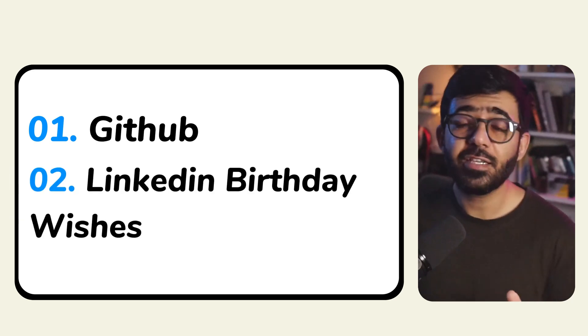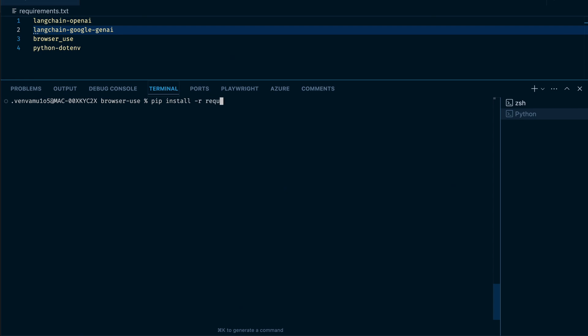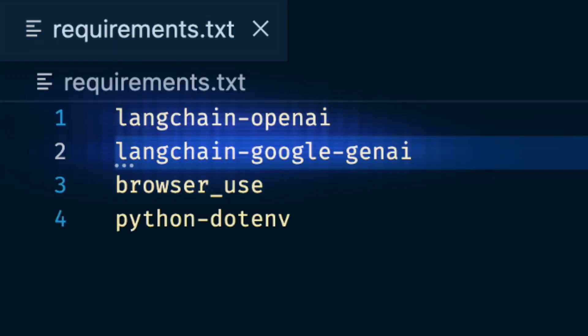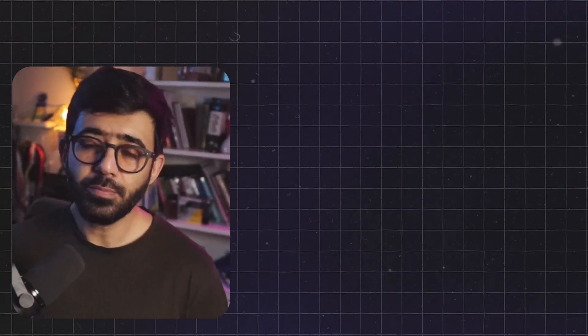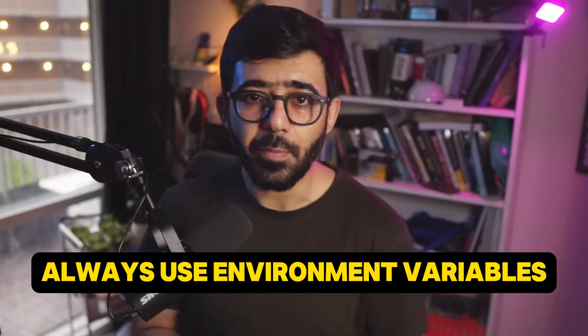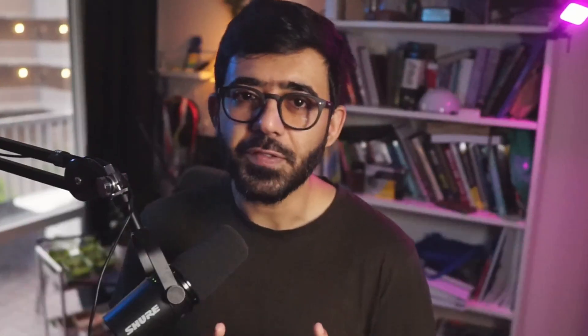First things first: you need to install Python, then pip install langchain-openai or langchain-google-genai, and then of course our star of the show, browser-use. You'll also need API keys for your chosen LLM — for example from OpenAI or Google AI Studio — and crucially for the LinkedIn part, you need login credentials. Security alert: never put your credentials or API keys directly into the code and commit it. Always use environment variables. Seriously, don't be that person.